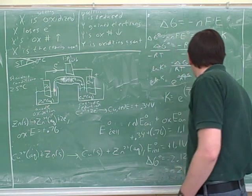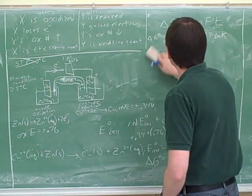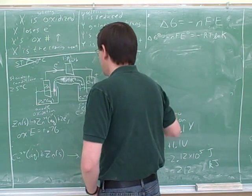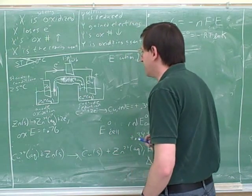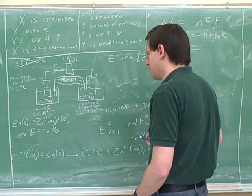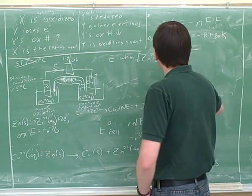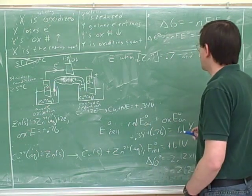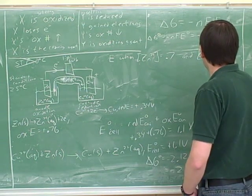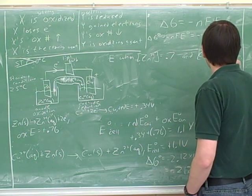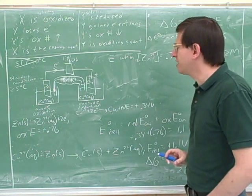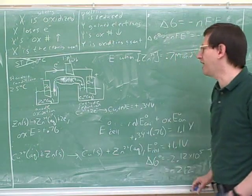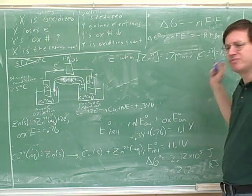So we might wonder, say, what would be the cell potential if the zinc 2+ concentration is, say, 1.7, and the copper 2+ concentration is, say, 1.2 molar. These could be any numbers. Even though we figured out the standard cell potentials, we don't actually have to start with one molar concentrations. That's just a hypothetical value. So we could ask, what would be the cell potential at these concentrations?